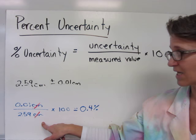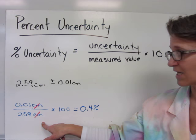0.01 divided by 2.59, your centimeters cancel, times 100, you'll get 0.4 percent uncertainty, so less than 1 percent.